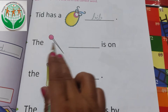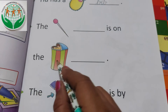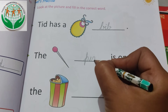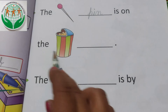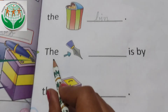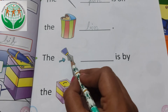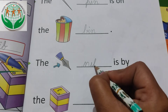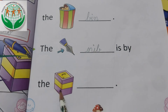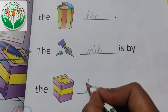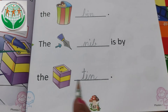And what is this? Pin. The pin is on the bin. Write down pin: P-I-N. Bin — B-I-N. And what is this? Nib. The nib: N-I-B. The nib is by the — what is this? Tin — T-I-N. The nib is by the tin.